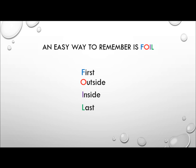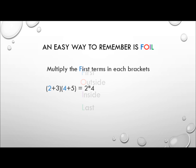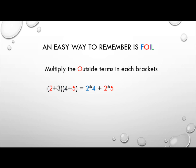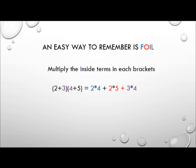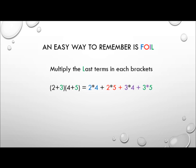An easy way to remember this is FOIL — an acronym standing for First, Outside, Inside, Last. Multiply the first terms in each bracket, then the outside terms, then the inside terms, then the last terms. This again gives us 2×4 + 2×5 + 3×4 + 3×5, which is 45.